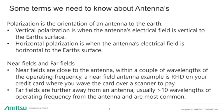Some terms we need to know about antennas for measurements: Polarization is the orientation of an antenna to the Earth. Vertical polarization is when the antenna's electrical field is vertical to the Earth's surface. Horizontal polarization is when an antenna's electrical field is horizontal to the Earth's surface.